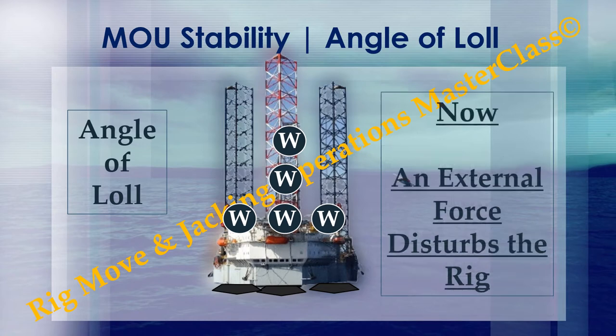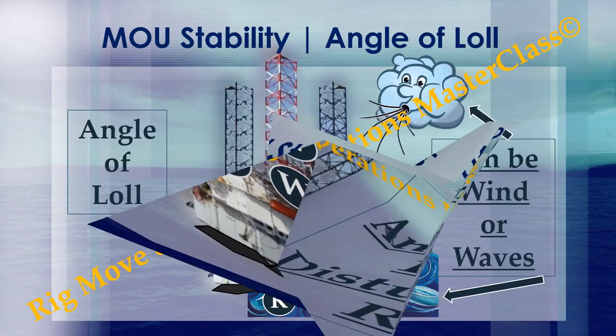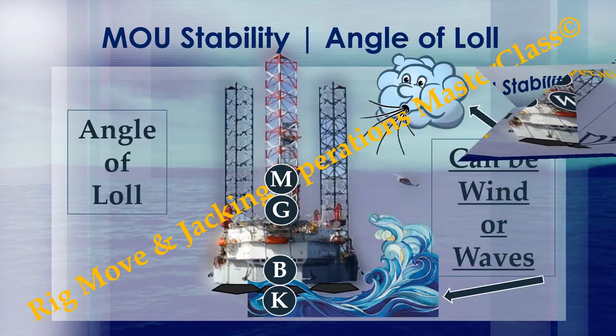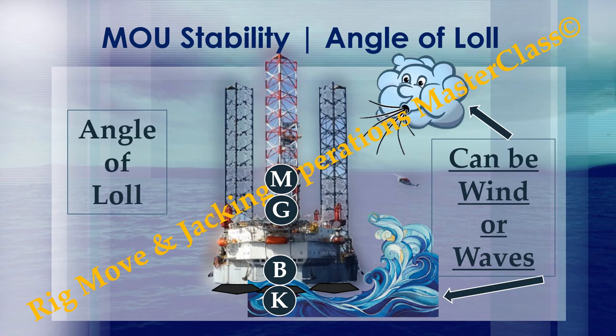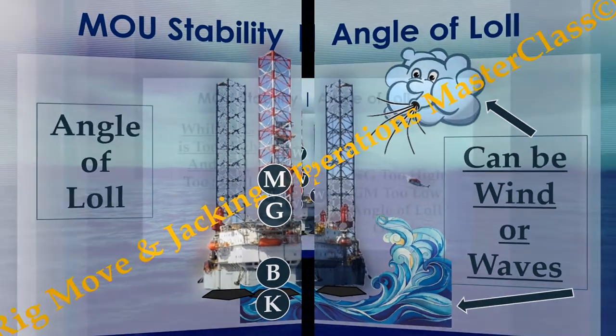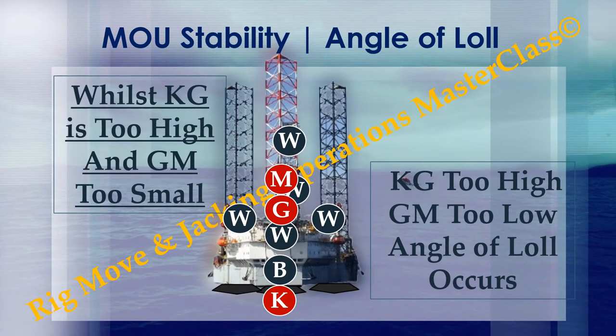Now, the following happens. An external force disturbs the rig — either wind or waves — whilst KG is too high and GM too small. KG too high, GM too low: angle of loll occurs.